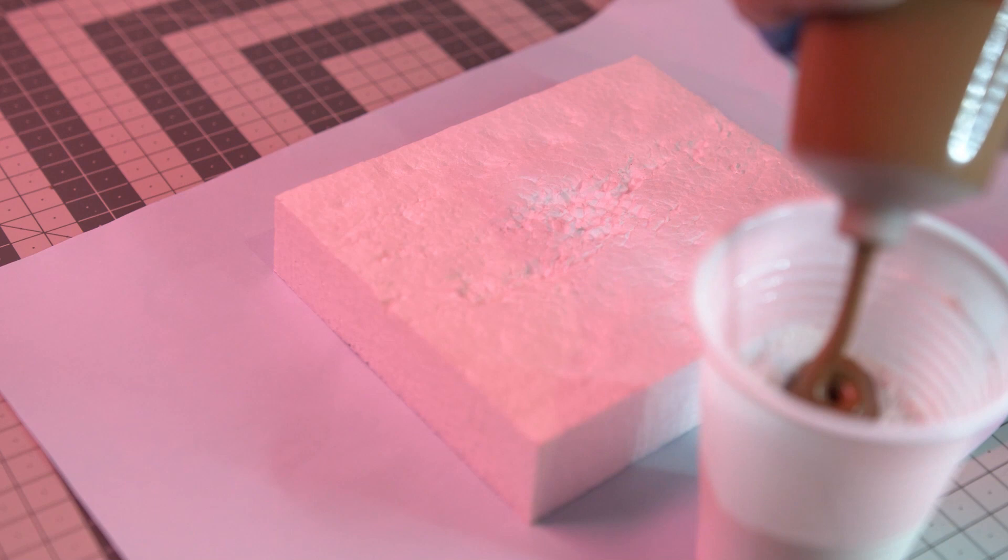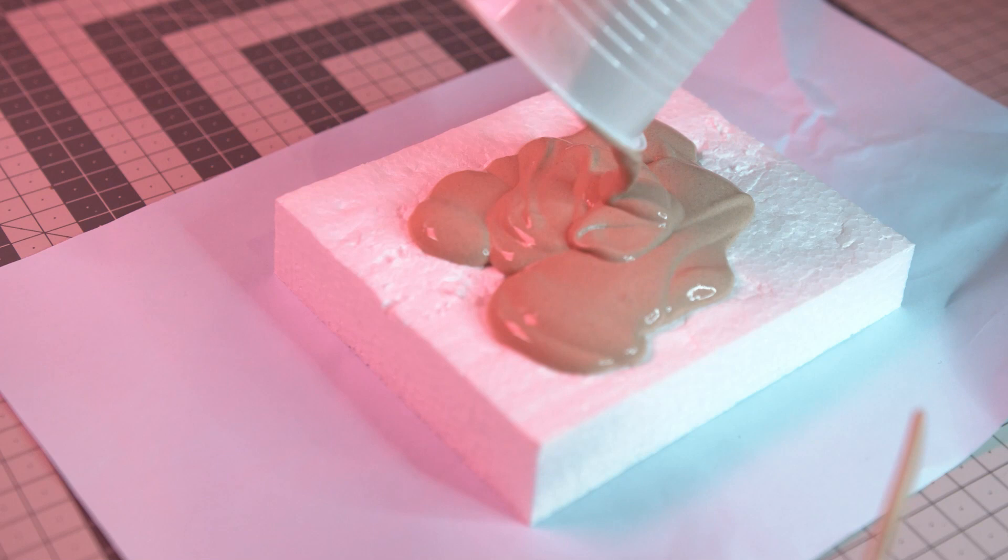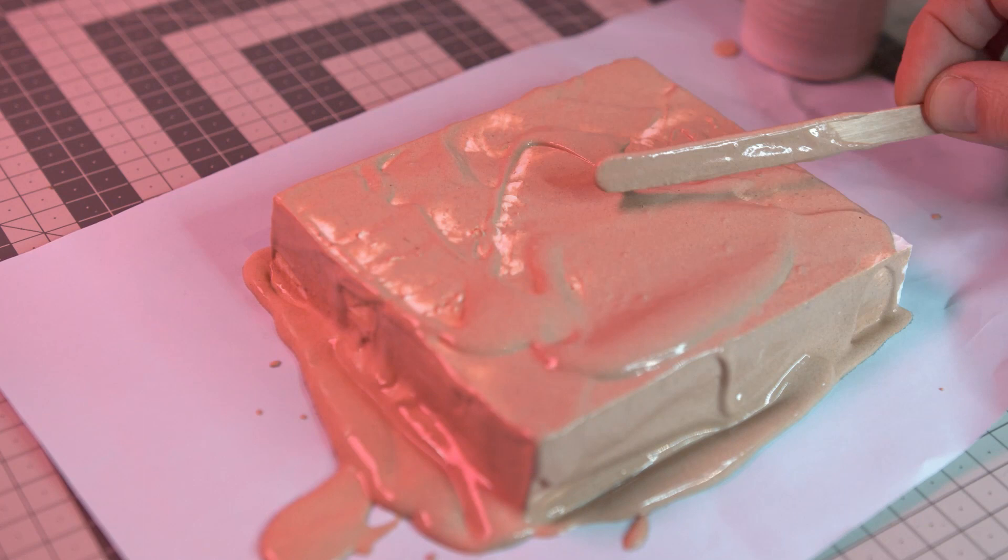Anyway, I knew I had to make the styrofoam sturdier, so I mixed up a batch of plaster, mod podge, brown paint, and water, then covered everything in it. While still wet, I add a couple of plaster rocks I had left from a previous project and smaller plaster rocks and sand.